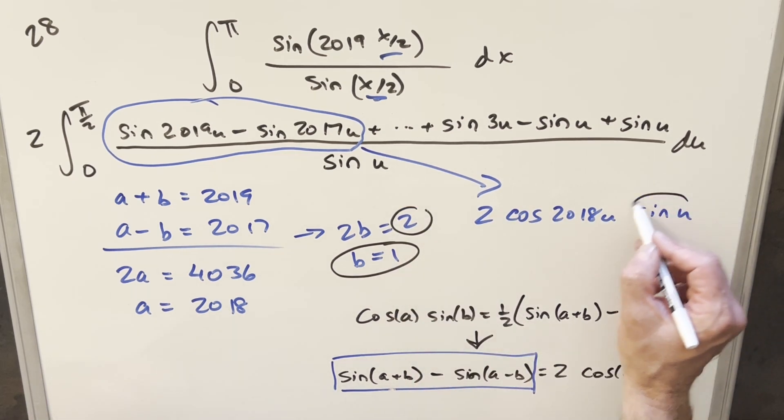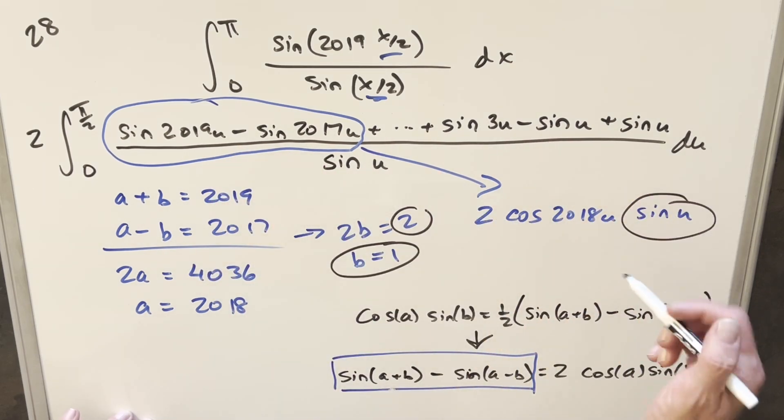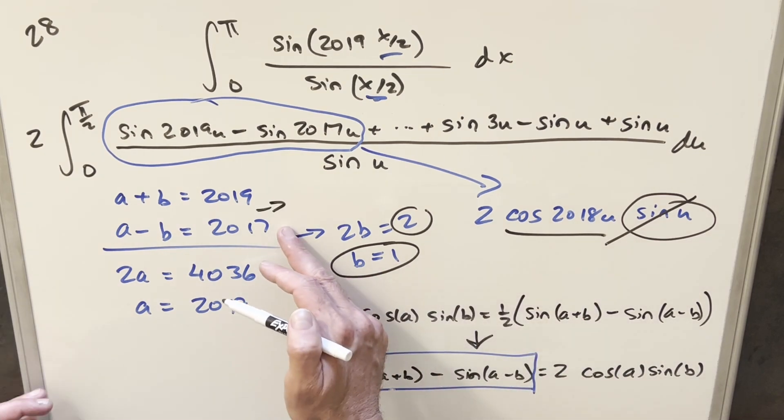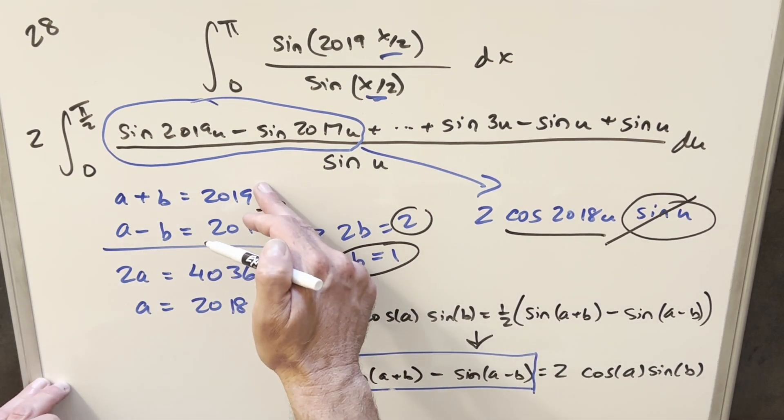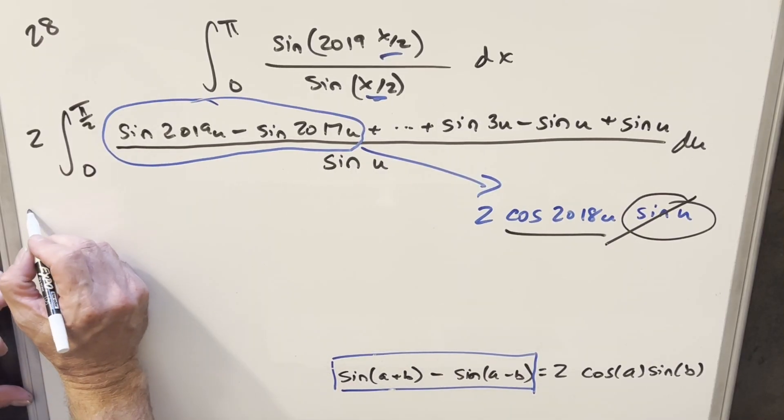So in each case, we're going to end up with a sine u term, but we have that in the denominator. So in every single one of these, the sine u is going to cancel out, and we just need to focus on the cosine term. And that's just going to be the value in between the upper and the lower, like 2018. So now let's use this to rewrite our integral.